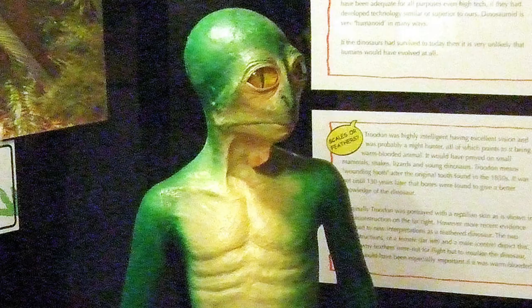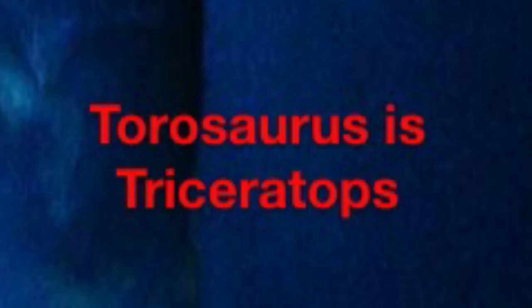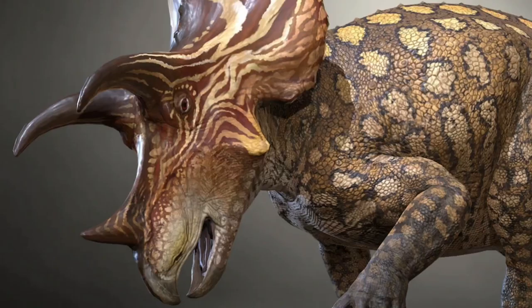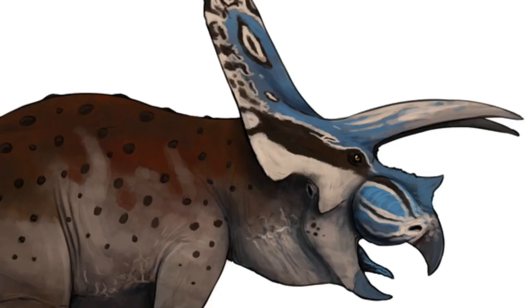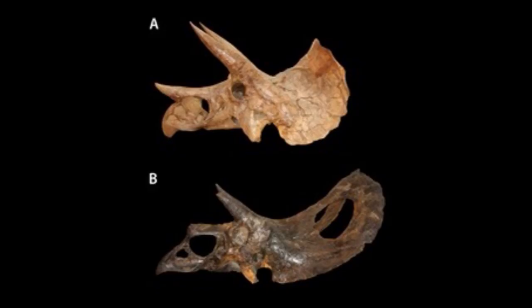Torosaurus is Triceratops. Both of these famous ceratopsians coexisted in the Hell Creek Formation, but there has been a debated hypothesis suggesting these were both the same animal, with Torosaurus being an elderly Triceratops. It suggests that over time, Triceratops would grow longer frills with holes. Now we dive even deeper, to layer 5.